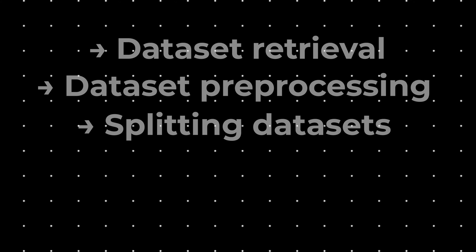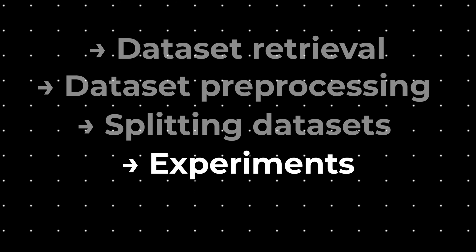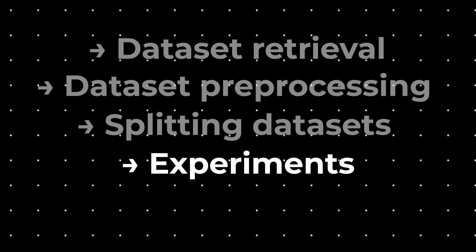Now a machine learning model is set for experiments. This is when fine-tuning of the architectural model and hyperparameters modification happens.